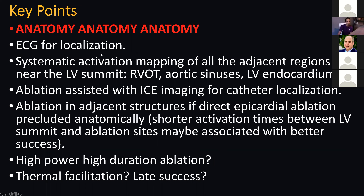You've got to be systematic. You can use ECG for localization to help set expectations for patients. You can do systematic activation mapping — you've got to map all adjacent structures. You can certainly map the RVOT, the aortic sinuses, and the RV endocardial. I highly stress ICE imaging for catheter location and imaging of the critical structures. Remember: if you're not able to directly ablate in the epicardial region, then ablating in adjacent structures is the way to go. The shorter the activation time difference between the site of origin and where you're ablating, the more likely you'll be successful.